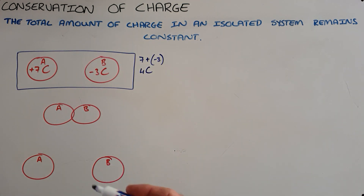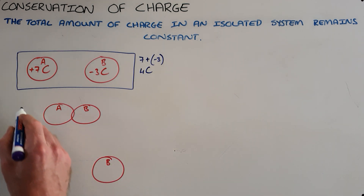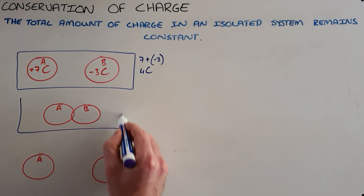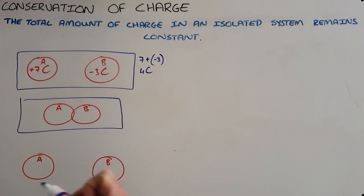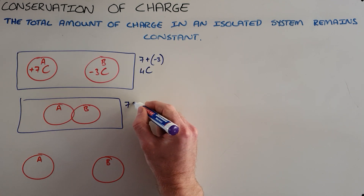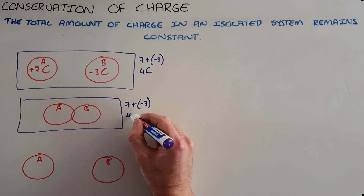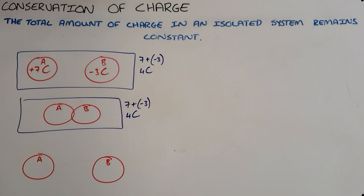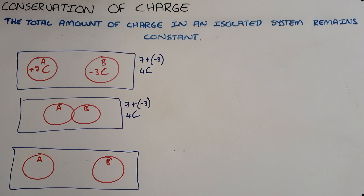What would then happen is these two objects are brought into contact with each other, where they touch each other and as a result of this contact they are able to share charge. At this point we still have the total amount of charge — 7 coulombs plus negative 3 coulombs — we still have 4 coulombs of charge in the system. These objects are then separated once again, still an isolated system containing only these two objects.